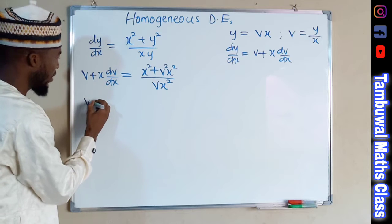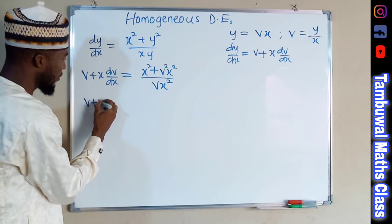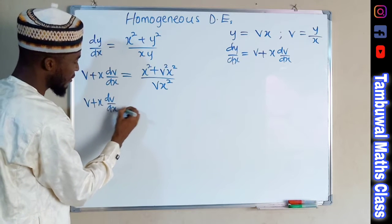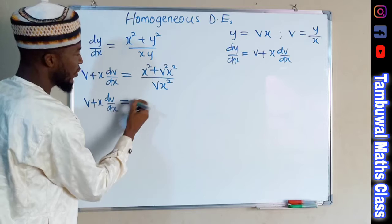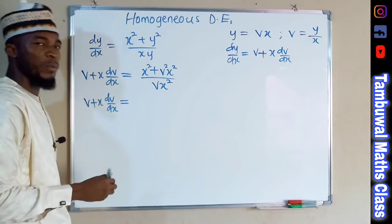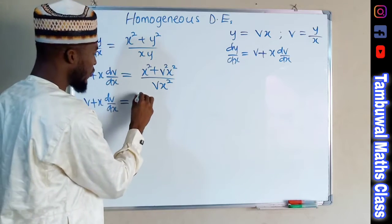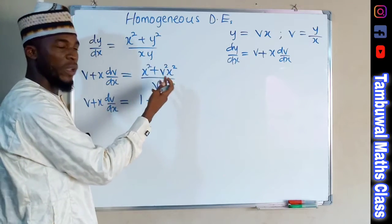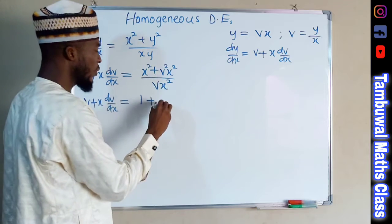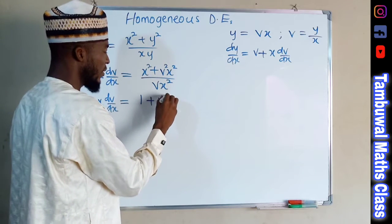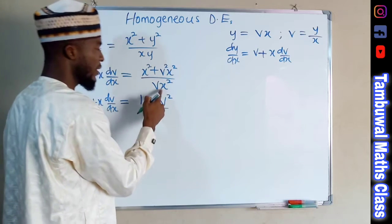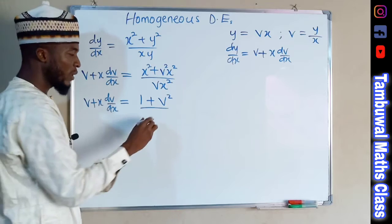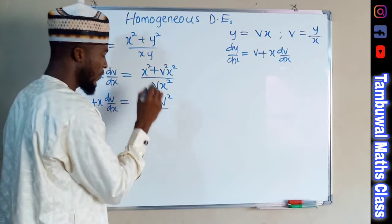Each term contains x squared, so we divide each term by x squared to clear it. We have v plus x dv over dx equals x squared over x squared, which is 1, plus v squared x squared over x squared, which is v squared, all divided by v.